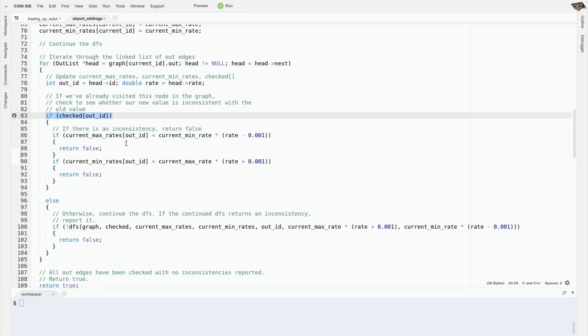If the neighbor that we're looking at has already been checked, we'll see if there's an inconsistency. We'll tell whether there's an inconsistency by seeing whether our two maximum and minimum ranges overlap. If they do, we'll return false, otherwise we'll return true, and that'll happen at the end of the function.